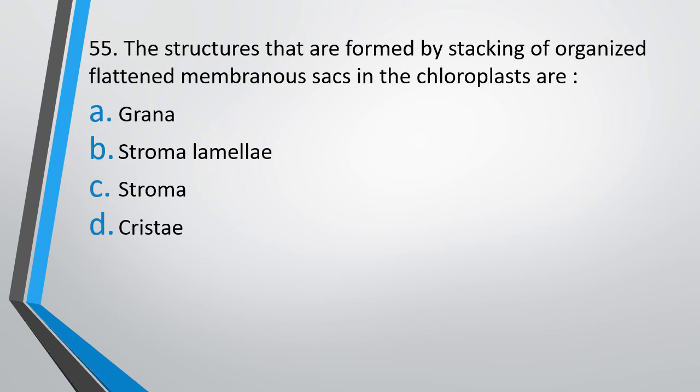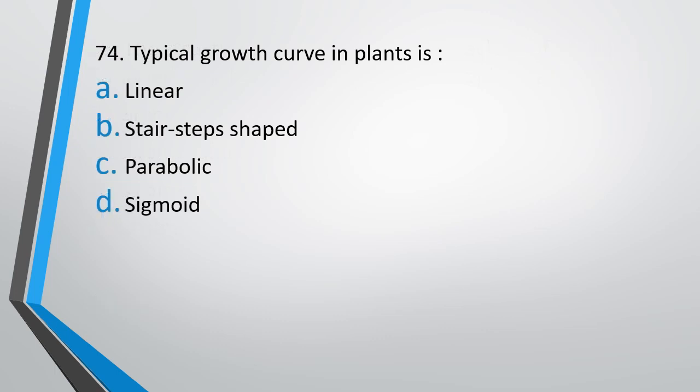Question number 55. The structures formed by stacking of organized flattened membranous sacs in a chloroplast are: grana, stromal lamellae, stroma, or cristae. The correct answer is option A — grana. Question number 74. The typical growth curve in plants is: linear, stair-step shaped, parabolic, or sigmoid. The correct answer is option D — it is sigmoid in shape.